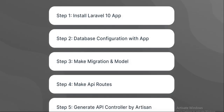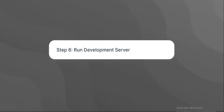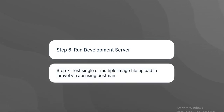Step 1: Install Laravel 10 app. Step 2: Database configuration with app. Step 3: Make migration and model. Step 4: Make API routes. Step 5: Generate API controller by artisan. Step 6: Run development server. Step 7: Test single or multiple image file upload in Laravel via API using Postman.